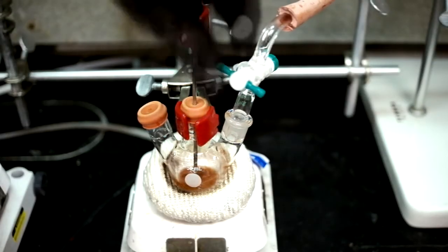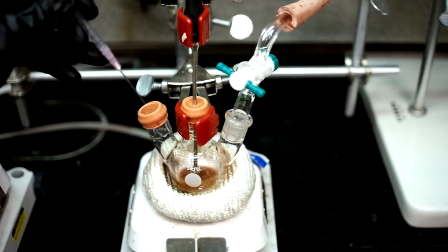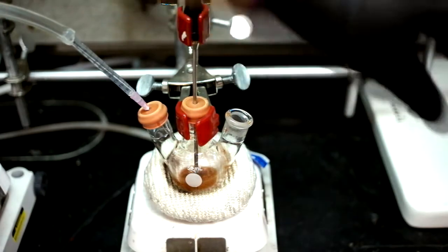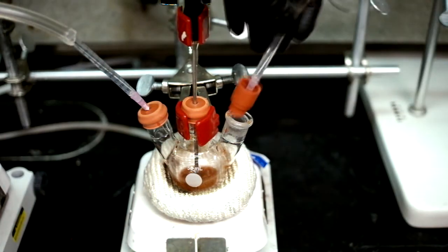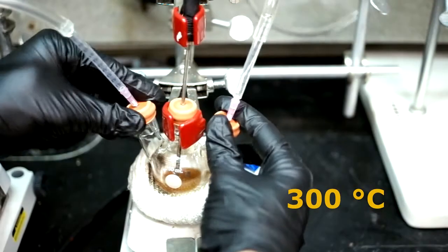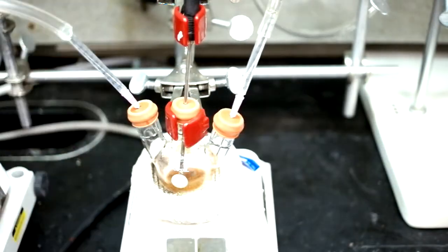After degassing, we can take the cadmium flask and put one argon needle in to fill the flask with argon. We can then remove the vacuum and replace it with an exhaust needle. We'll then heat this flask up to 300 degrees or until the cadmium is dissolved and we're left with a clear solution.